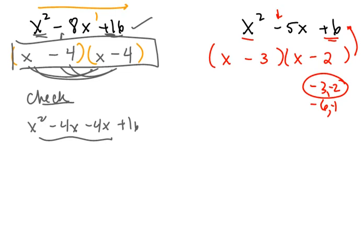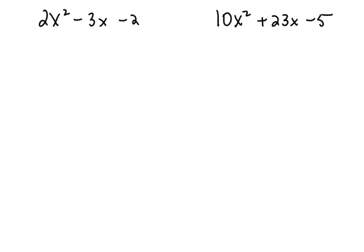A more formal approach to factoring trinomials is to use decomposition, and it's one that you might have been taught in your previous math course. What you do is multiply the leading coefficient and the constant together — which gives negative 50 here — and find all the factor pairs that multiply to give you negative 50. So that's negative 10 and 5, or negative 5 and 10, and 25 and negative 2, or 2 and negative 25, or 50 and negative 1, and negative 1 and 50. You are looking for the pair that adds to give you 23, and the two numbers that add to give positive 23 is this choice right here.